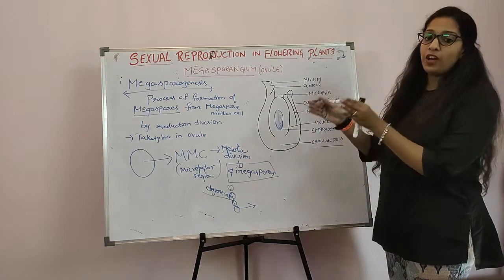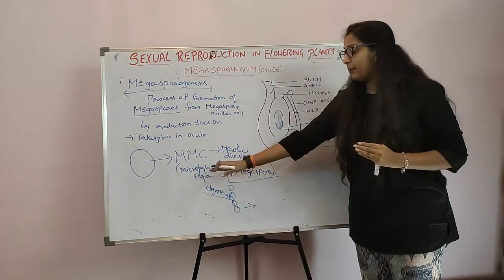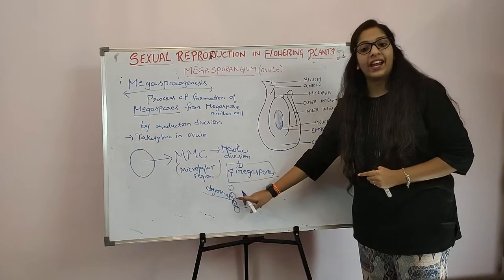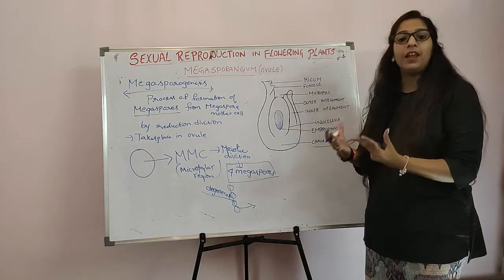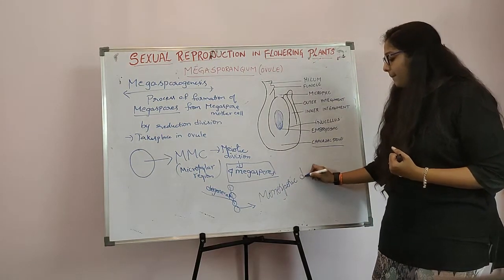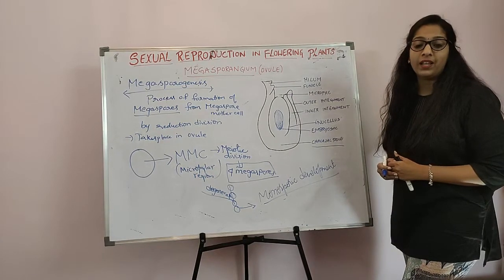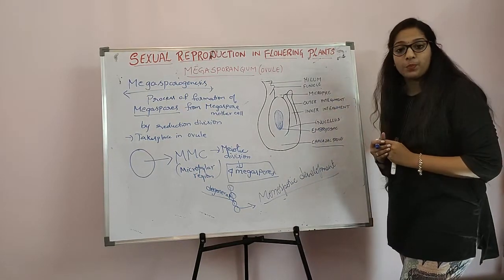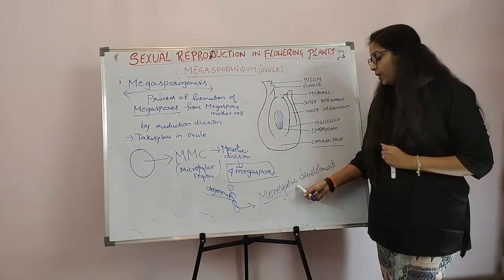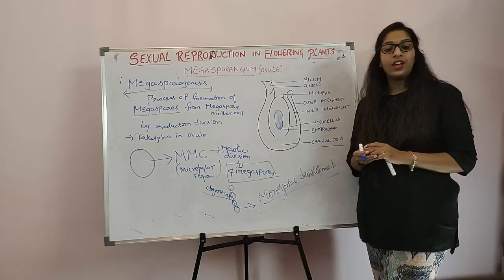The Megaspore Mother Cell undergoes meiotic division in the micropylar region of the Nucellus, forming four megaspores — three degenerate and one develops. This process is known as Monosporic Development. That is about Megasporogenesis. Hope you have understood. Thank you for listening.